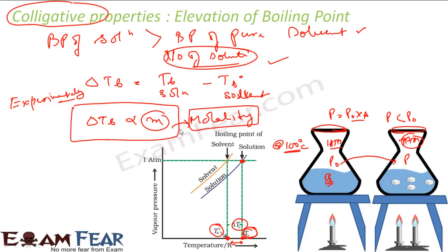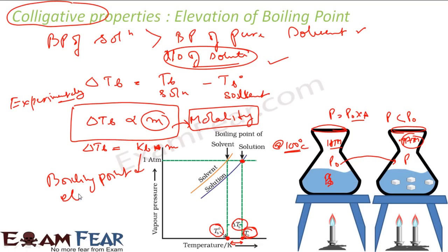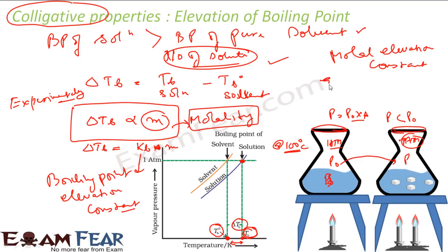So delta T_b, the elevation in boiling point, is directly proportional to molal concentration. To convert to an equation: delta T_b = K_b × m. What is K_b? K_b is nothing but the boiling point elevation constant. It is also called the molal elevation constant. It is also called the ebullioscopic constant. So there are three names: boiling point elevation constant, molal elevation constant, or ebullioscopic constant.